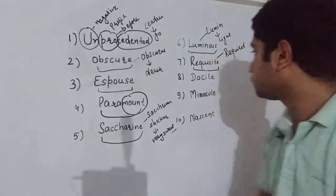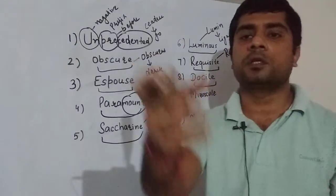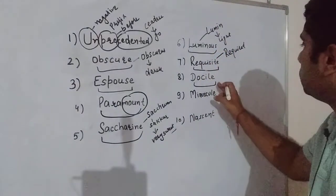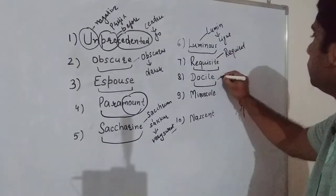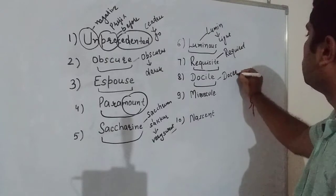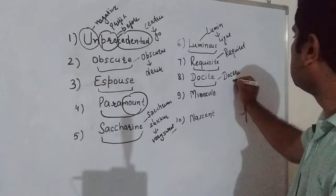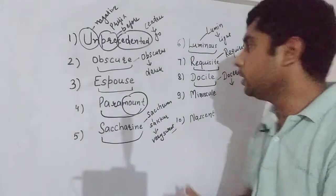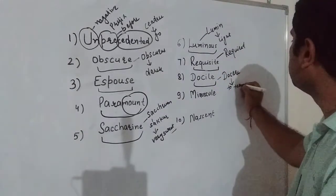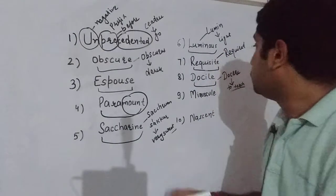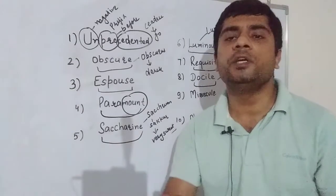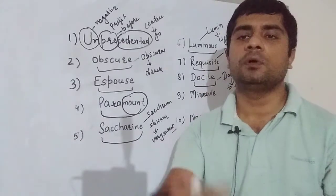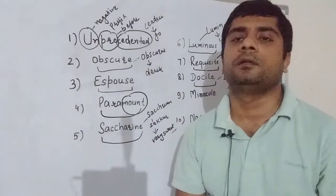Next word hai docile. Docile aya hai Latin docere se. Latin docere ka matlab hota hai to teach. So docile ka matlab hota hai jo easy to teach ho, jisko asani se sikhaya ja sake, jo obedient ho, jo agyakari ho. Docile ka matlab hai agyakari.